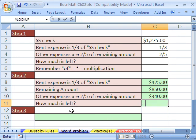Now it's straightforward, how much is left, equals our, the amount we had before we calculated our other expenses, minus the 340, and we're left with 510 bucks.